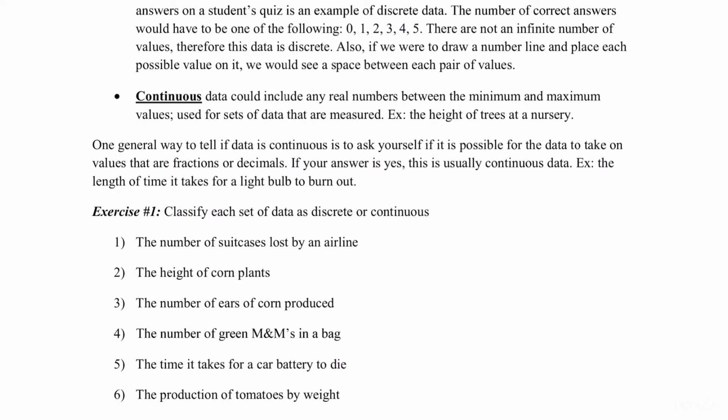And lastly, number six. The production of tomatoes by weight. That is also going to be continuous data because you can keep breaking it down further. So hopefully you got all of these correct.